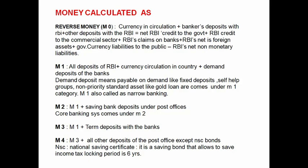M2 equals M1 plus savings deposits under the post offices. M1 consists of all deposits with RBI, currency in circulation, and demand deposits. Along with these, M2 also includes savings bank deposits under post offices. For example, the core banking system comes under M2.